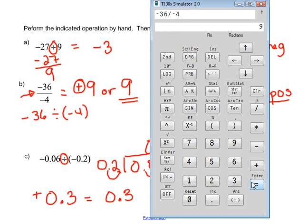And then our final one, negative 0.06 divided by negative 0.2 is going to give us 0.3, just like we calculated by hand.